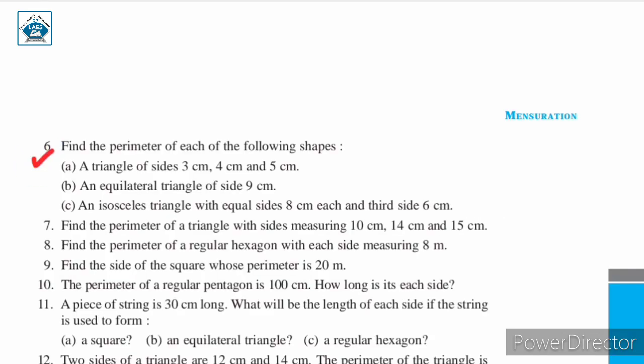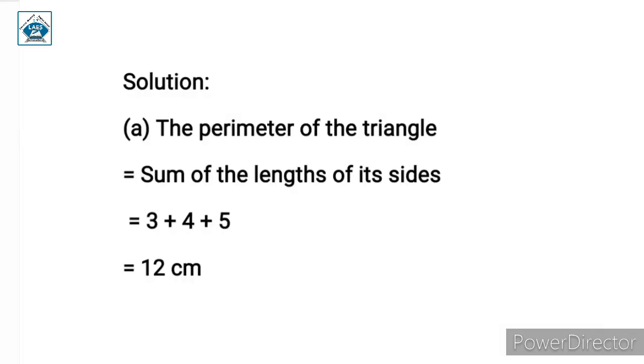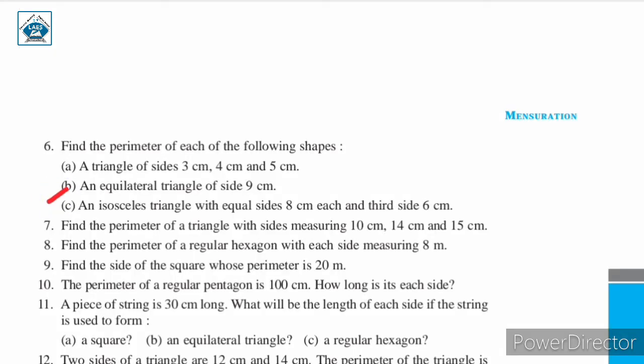Question number six: find the perimeter of each of the following shapes. Part a: a triangle of sides 3 centimeter, 4 centimeter, and 5 centimeter. For finding the perimeter of a triangle, we simply add the three given sides. So the perimeter equals 3 + 4 + 5 centimeter, which is equal to 12 centimeter.